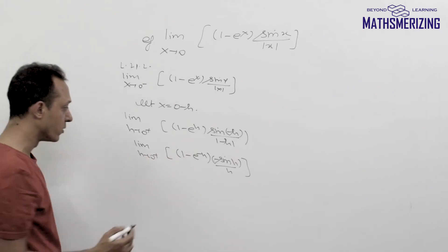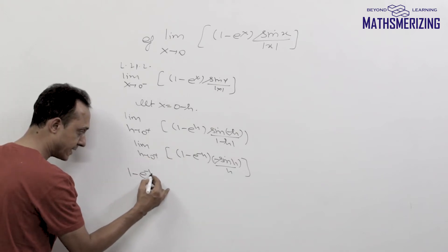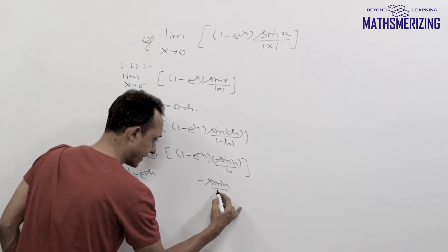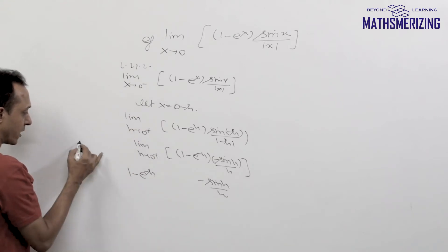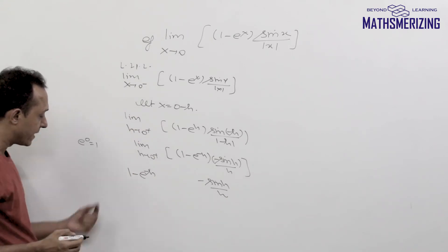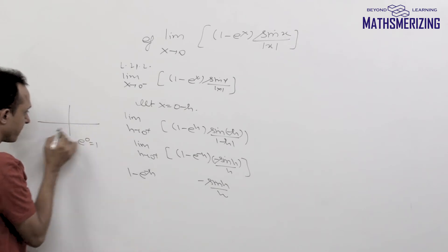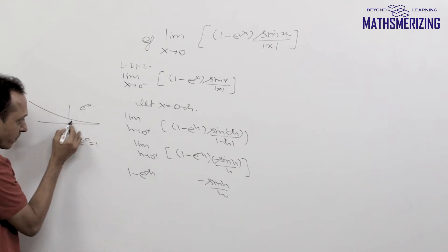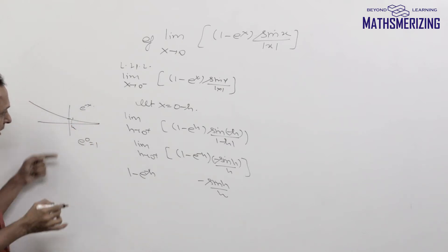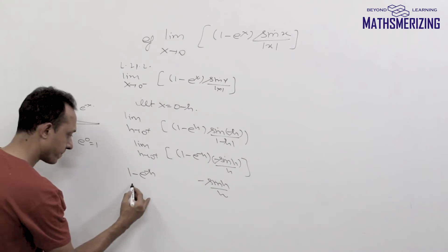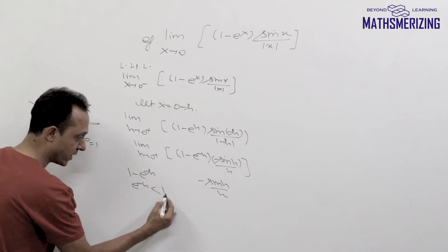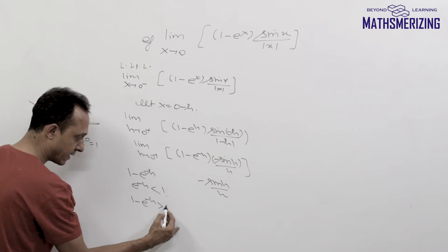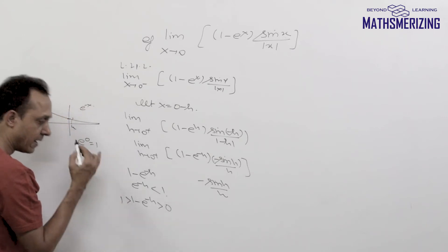I cannot take this limit inside, so I'll analyze the expressions separately. For 1 minus e to the power minus h: from the graph of e to the power minus x, e to the power 0 is 1, and for any small positive h, e to the power minus h will be less than 1. So 1 minus e to the power minus h is greater than 0 but less than 1.